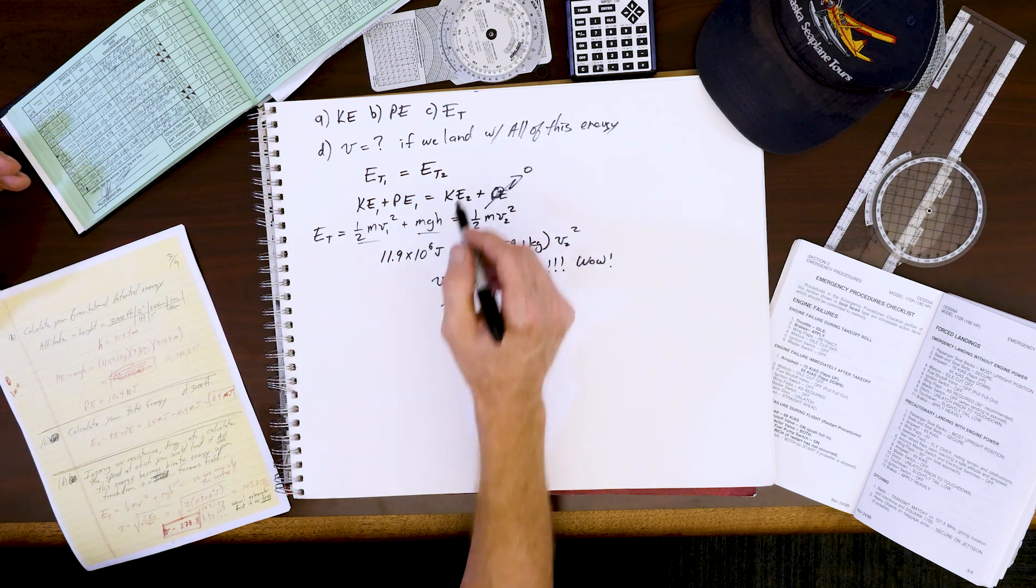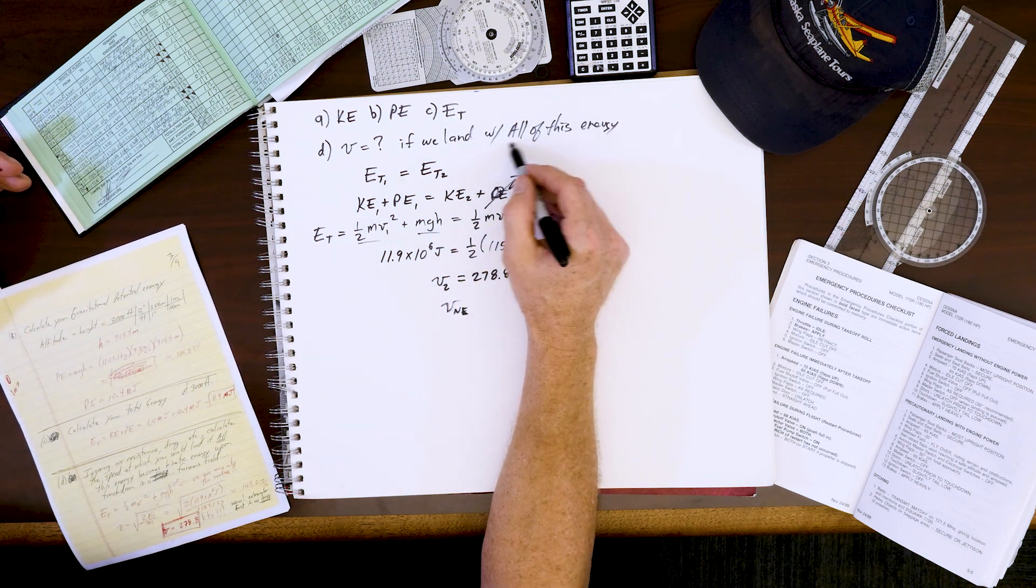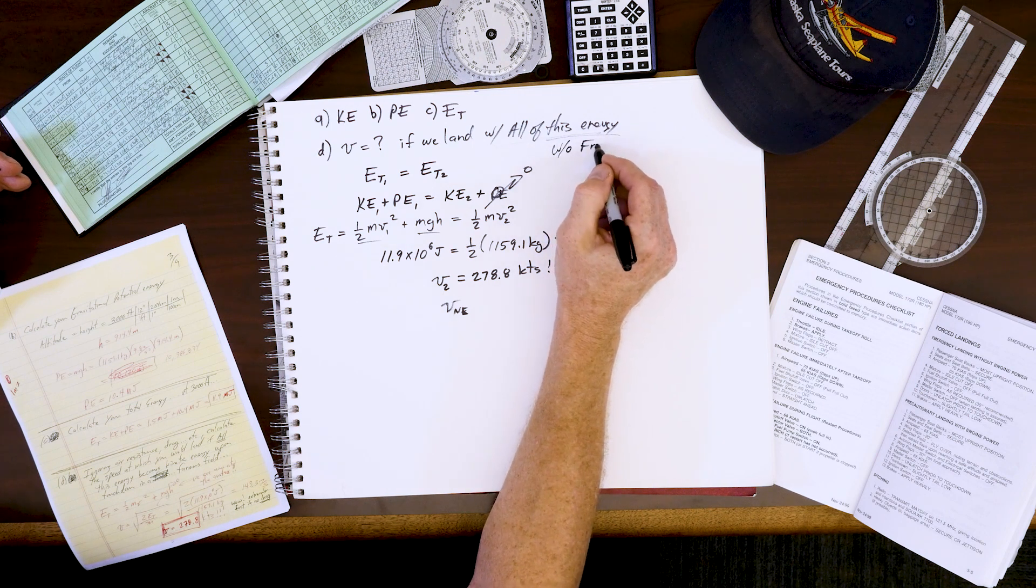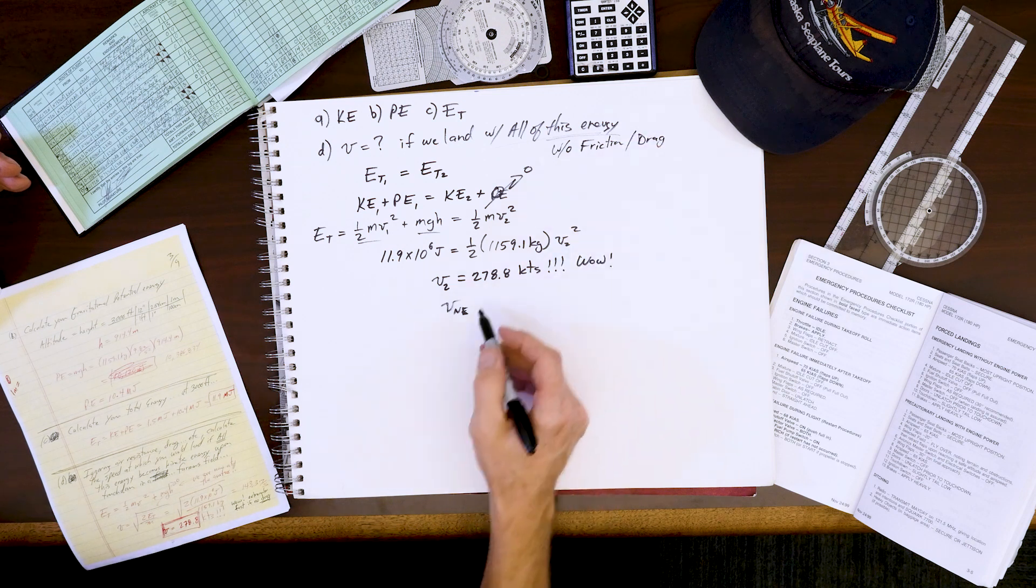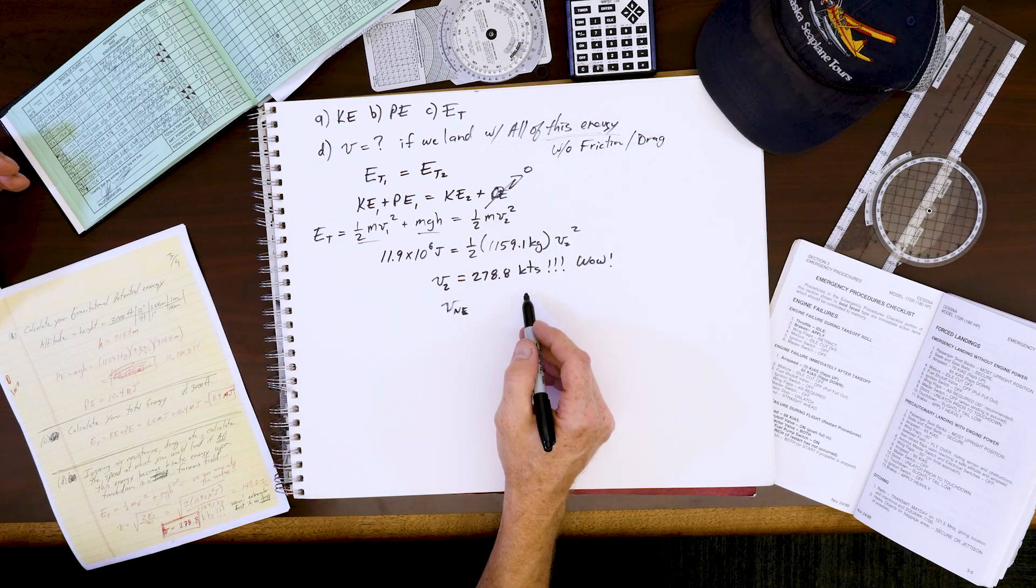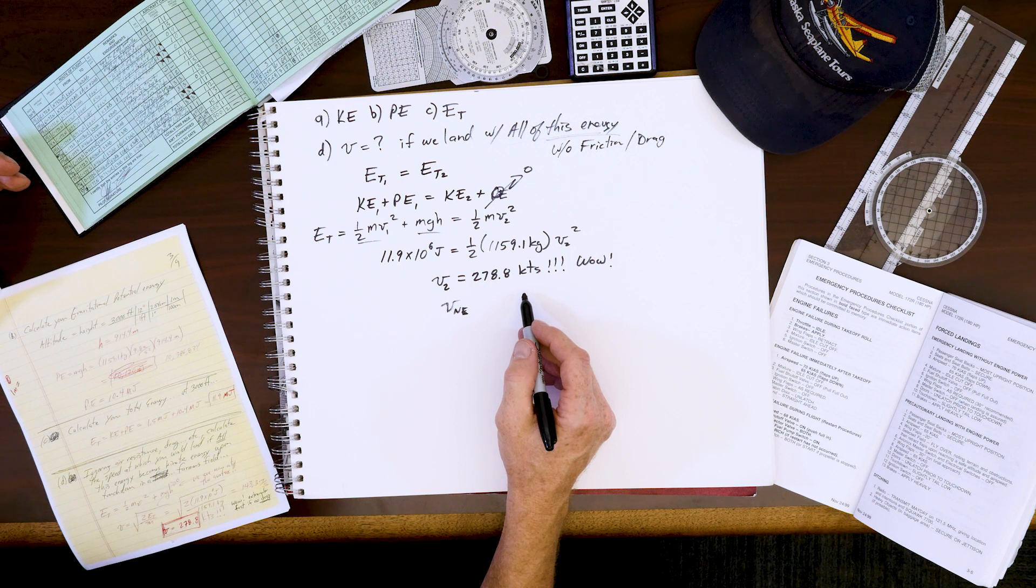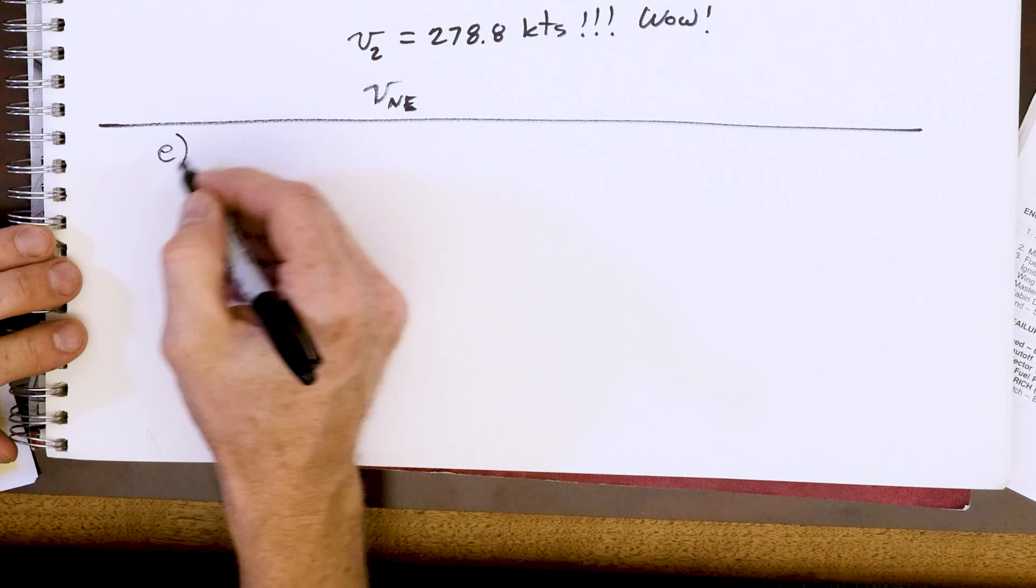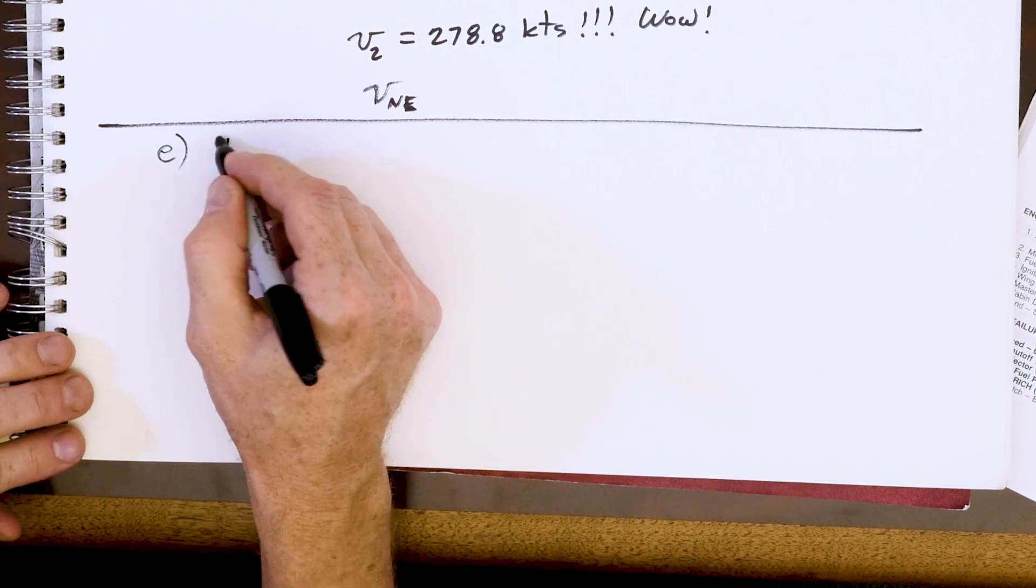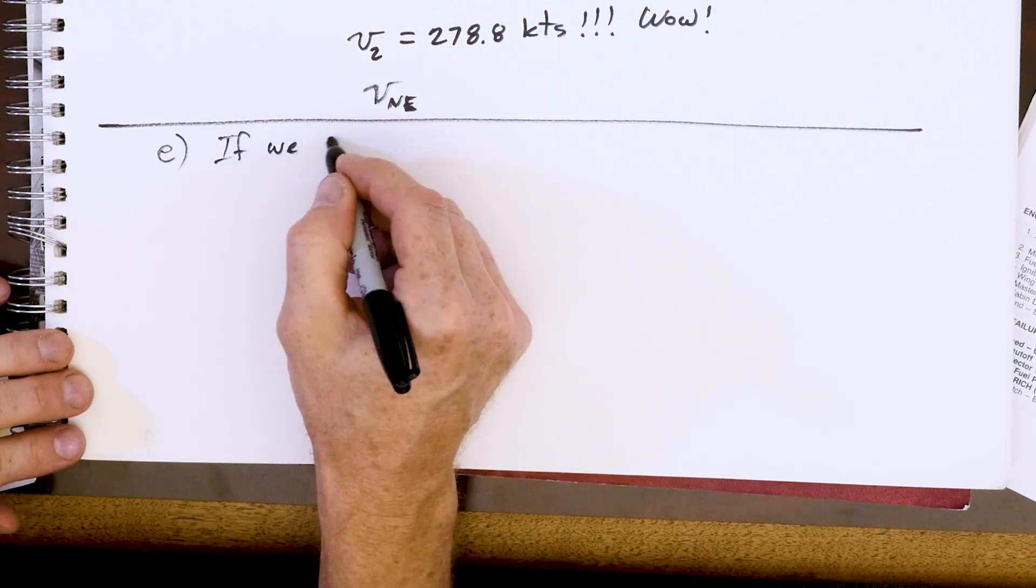But what are we assuming if we land with all of this energy without friction and drag? This is just an academic exercise so we can see wow, there's a lot of energy being lost to drag in reality. Okay, so that's what I want to do for part E. Part E: if we slow it down...